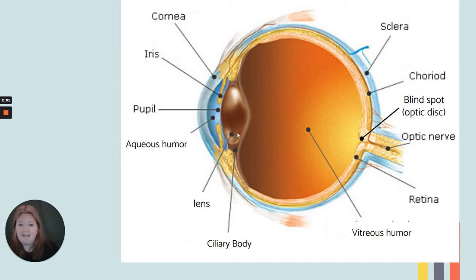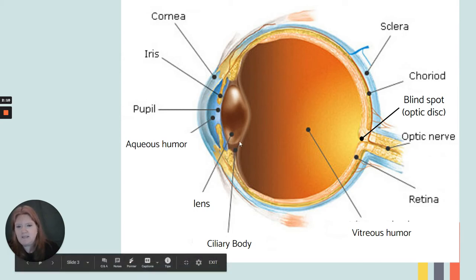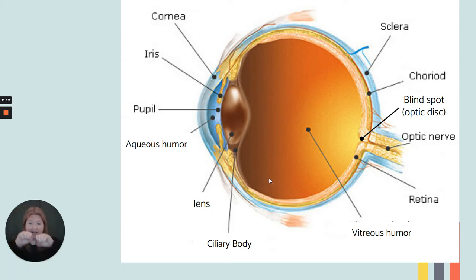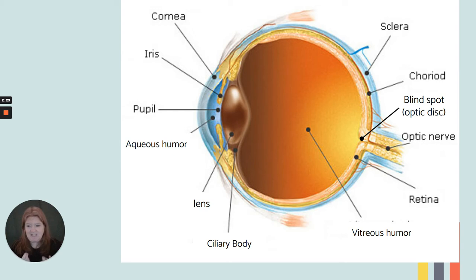Then we have the lens, which is the part of the eye that focuses light on the retina. The lens is held in place by the ciliary body. The ciliary body can also stretch out the lens or make it fatter in the middle — fatter in the middle would be to see something close up. Then we have the vitreous humor, a gel-like fluid in the center of the eye. When you do the cow eye dissections, that's what you would see — that fluidy kind of stuff when you've cut the eye in half.